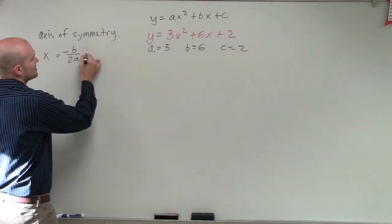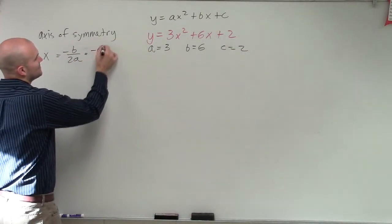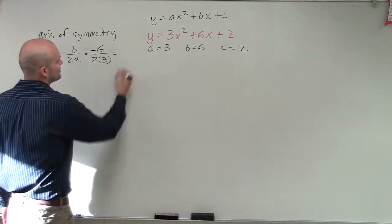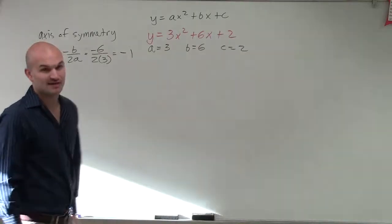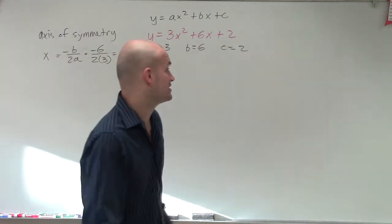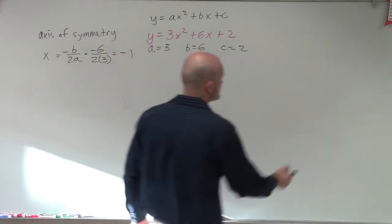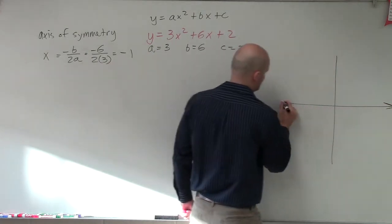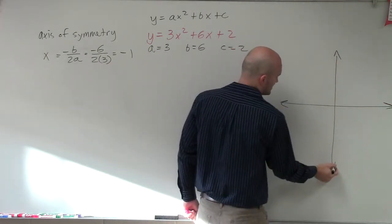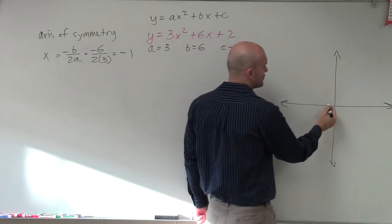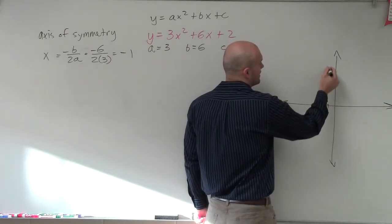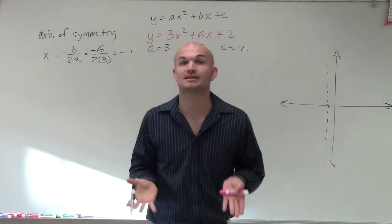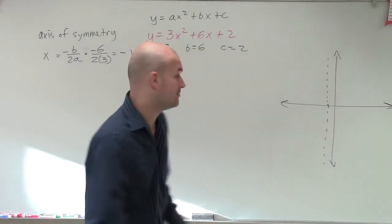Therefore, taking the opposite of b, that's going to be negative 6 divided by 2 times 3, which equals negative 1. So my axis of symmetry is at x equals negative 1. I'm now going to create my x and y-axis, go over to negative 1, and make a dotted vertical line — because it's not part of the graph itself, it's the line the graph is symmetrical about.